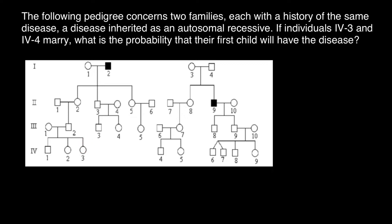So we have individuals 4-3 and 4-4, one from each family. Let's connect them with a line and place a child here of unspecified sex using the appropriate symbol. Because this is an autosomal recessive genetic disorder, sex is not important. According to this pedigree, both 4-4 and 4-3 have a normal phenotype, so we have to find the probability that they carry the recessive allele — that is, that they are carriers.